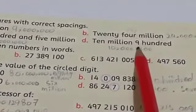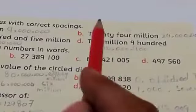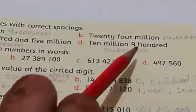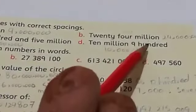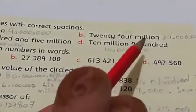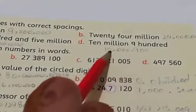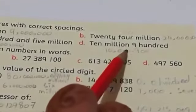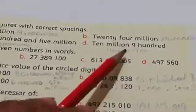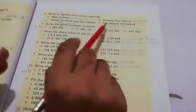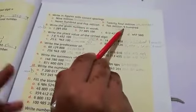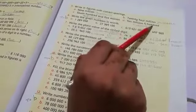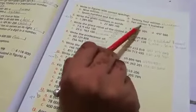Question D: ten million, nine hundred. Write 10 for ten million, then six digits follow. Since there is no thousands value, we write zeros in the thousands place. Nine hundred goes in the hundreds place. So the number is written as: 10,000,900. In international format: hundreds, then thousands, then millions — thousands are zero here, so write zeros there.